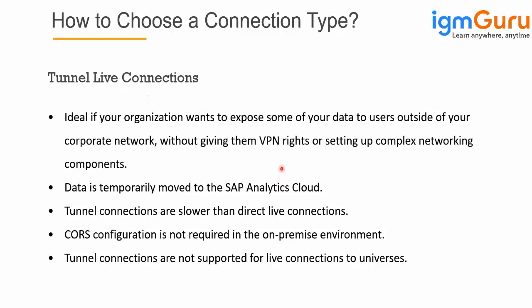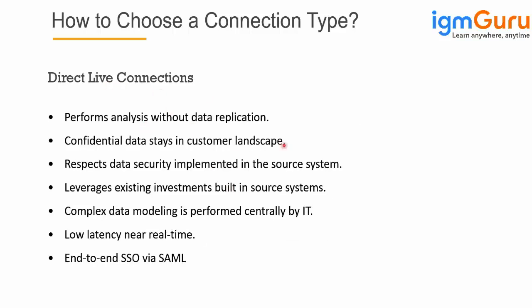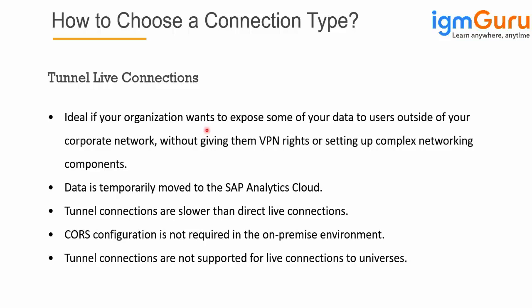With tunnel connections, data is temporarily moved to SAC only while you are executing the report — once the report is done, the data is cleared out. Think of it as a cache mechanism. Unlike direct connections where data is not moved at all, here it is temporarily moved until you run the dashboard. Since data is physically moved until the report executes, tunnel connections are usually slower than direct live connections. CORS configuration is not required for tunnel connections. Also, tunnel connections are not supported for live connections to SAP Universe data sources.